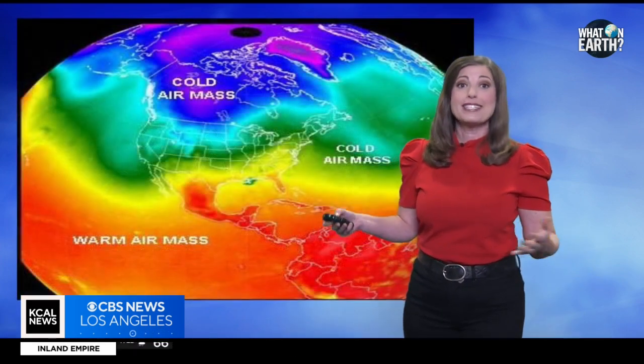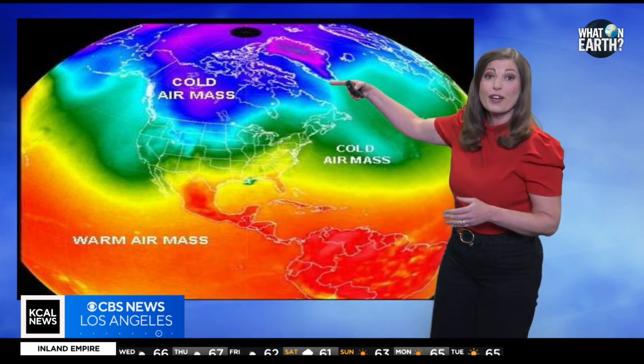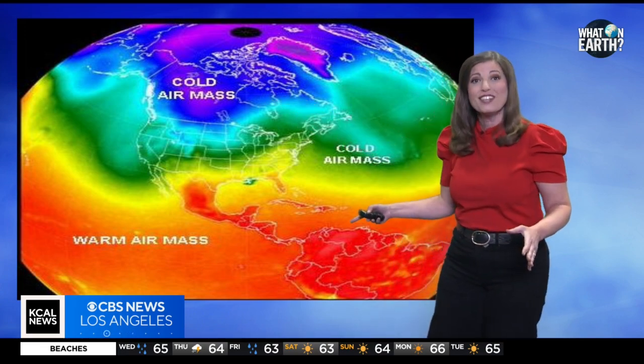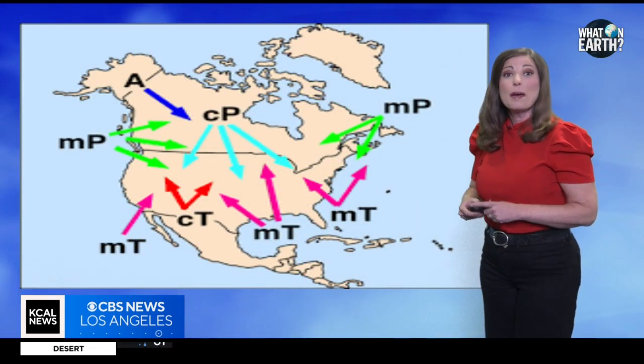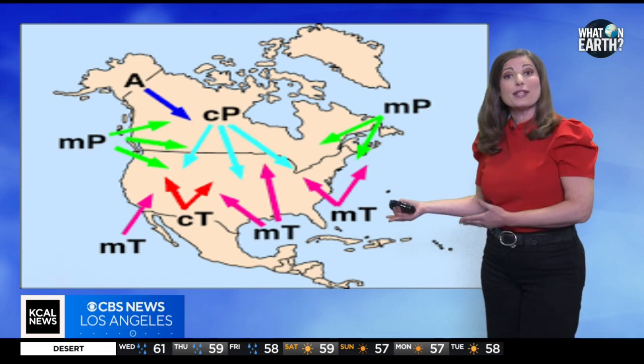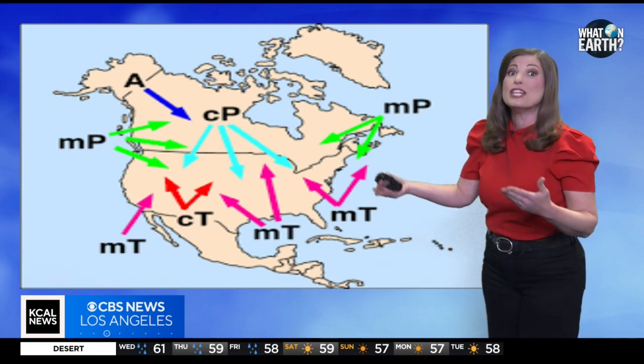As meteorologists, we identify air masses according to where they form over the Earth. In the United States, it's warmer in the southern tier and much colder in the northern tier. When you factor in both temperature and moisture content, we get five types of air masses: continental arctic, continental polar, maritime polar, maritime tropical, and continental tropical in North America.